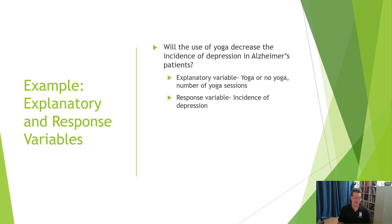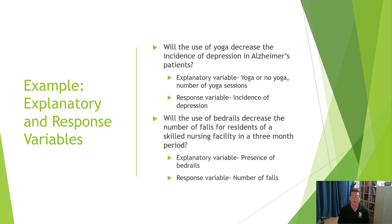Here's an example: Will the use of yoga decrease the incidence of depression in Alzheimer's patients? The explanatory variable is yoga or no yoga — or the number of yoga sessions — that's what we manipulate. Then we see whether we get a decrease or increase in the incidence of depression. Second example: Will the use of bed rails decrease the number of falls for residents of a skilled nursing facility in a three-month period? The explanatory variable is the presence of bed rails — add them in, take them out — then observe whether falls increase or decrease.